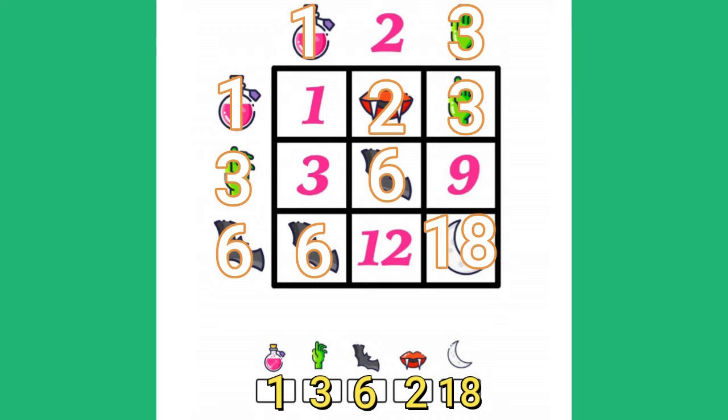So as review, the potion is 1, the hand is 3, the bat is 6, the fangs are 2, and the moon is 18.